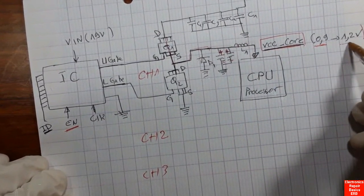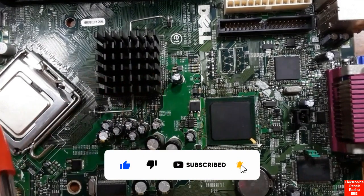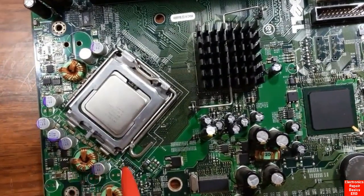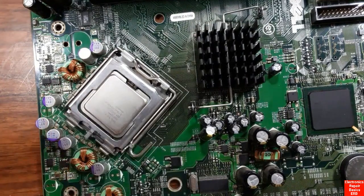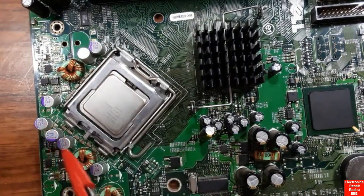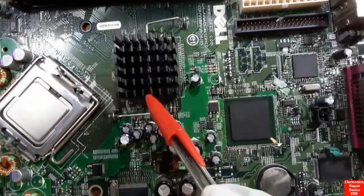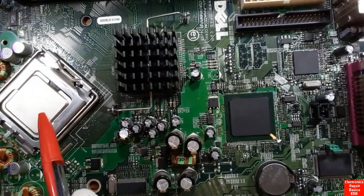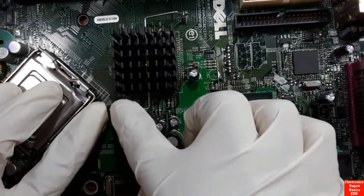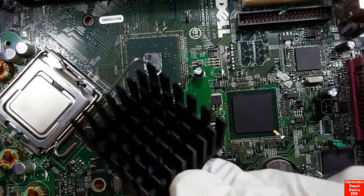As you can see, this is the GMCH or Graphic Memory Control Hub, also known as the North Bridge. The CPU has its channels — each inductor means a channel, with capacitors and MOSFETs forming one channel, as we've seen. For the North Bridge, we have just one channel, as indicated by one inductor. The heatsink is used to cool down the chipset.